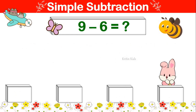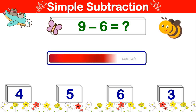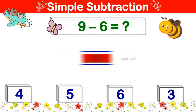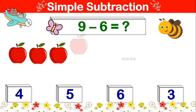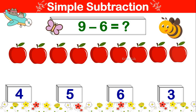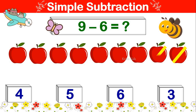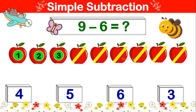9 minus 6 is equal to. Let's take 9 and subtract 6 from it. 1, 2, 3, 4, 5, 6, 7, 8, 9. Now let's subtract 6 from it. 1, 2, 3, 4, 5, 6. Remaining is 1, 2, 3. 9 minus 6 is 3.